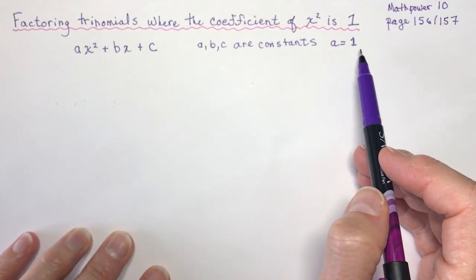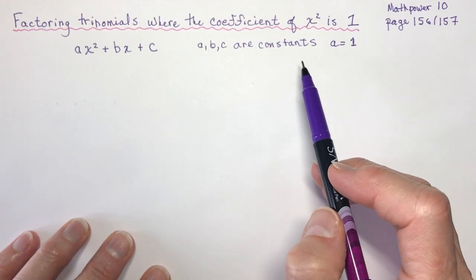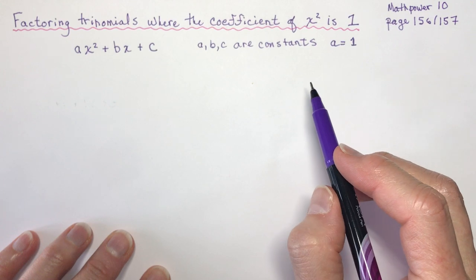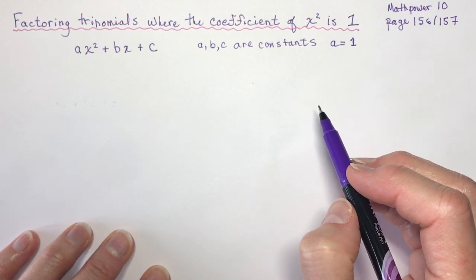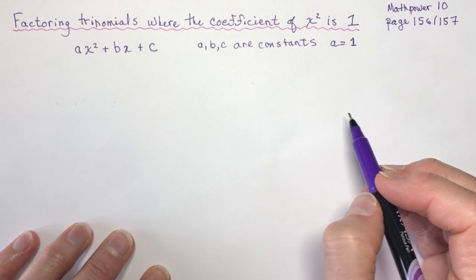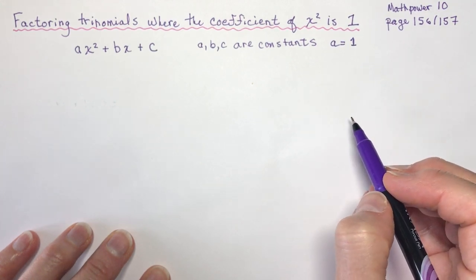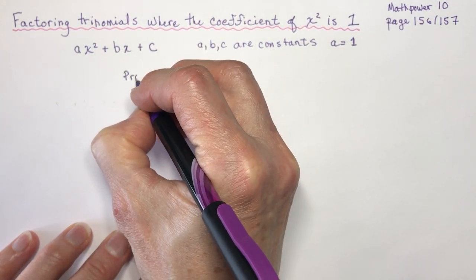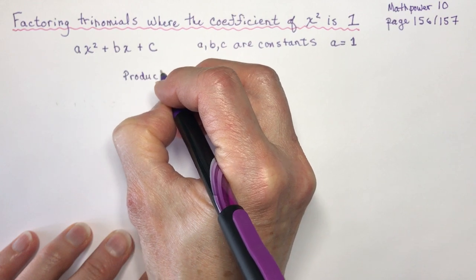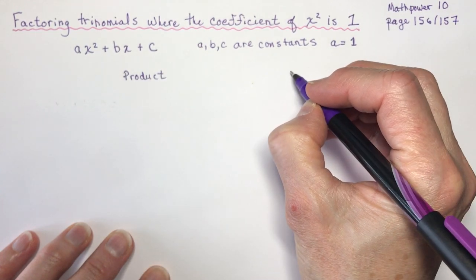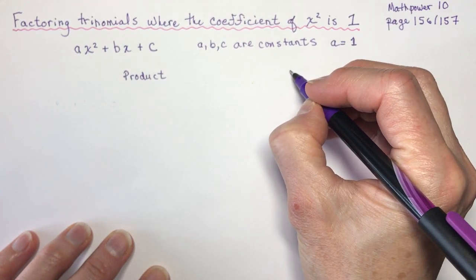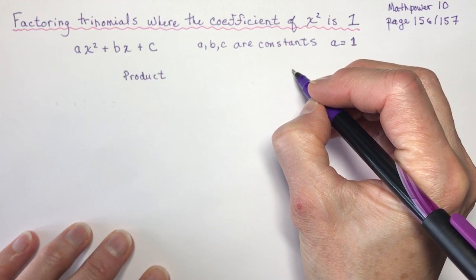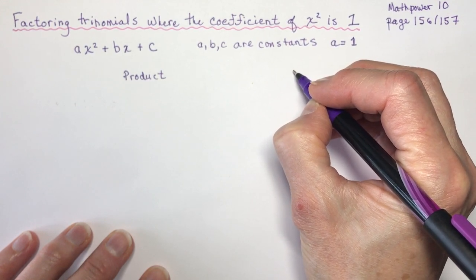Before we get into the factoring part, we need to do a little exercise where you need to tell me two numbers that multiply to something and add to something else. We're going to look for numbers that have a certain product — a product is like 2 times 3, that would be 6. So what has a product of 6? 2 times 3.